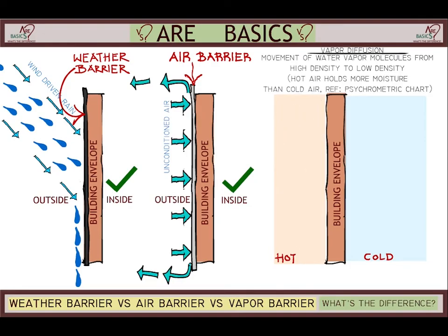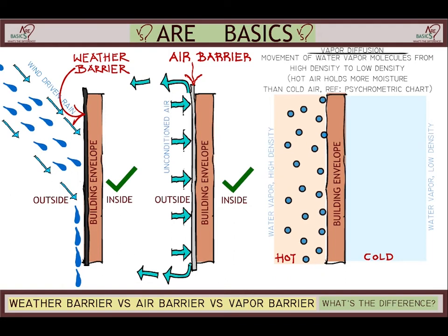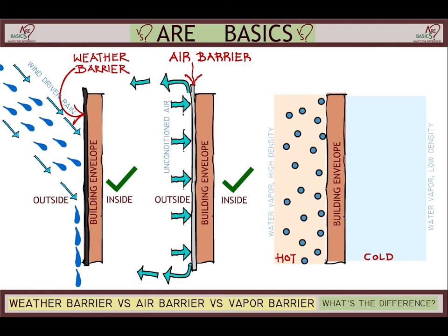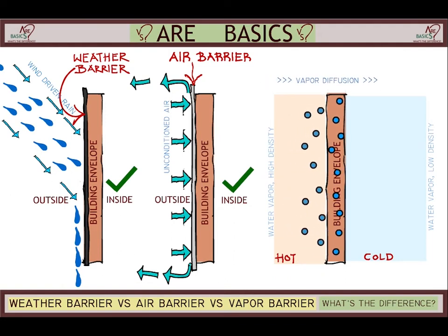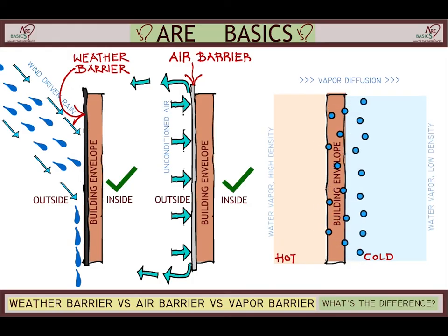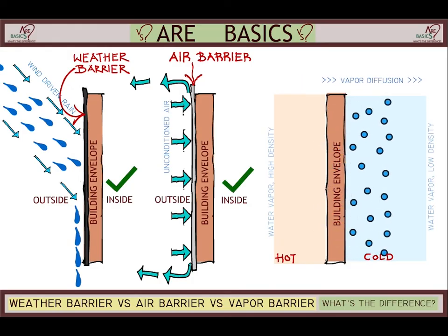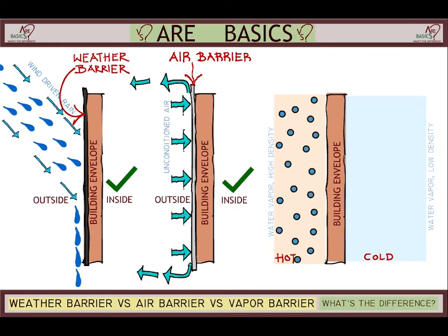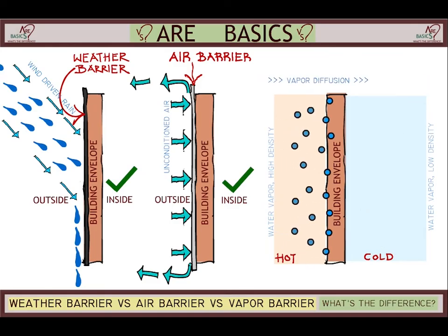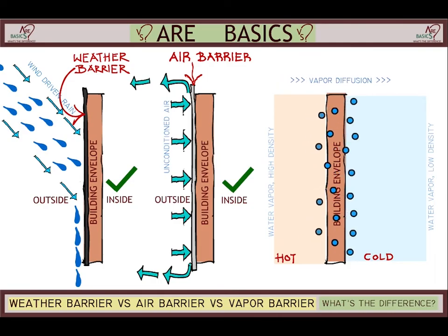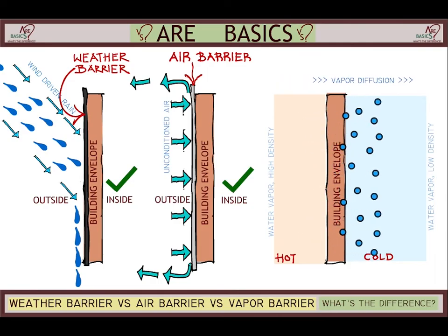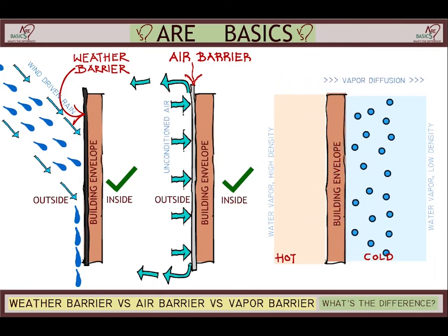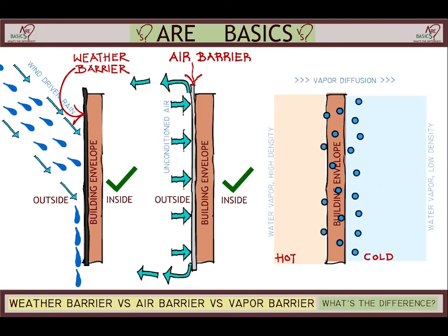Hot air can hold more moisture, and as a result, has high vapor density. Cold air, on the other hand, has a low threshold to hold moisture, which means low vapor density. This difference in densities causes vapor diffusion, where water vapor permeates through the building envelope from the hot side towards the cold side.